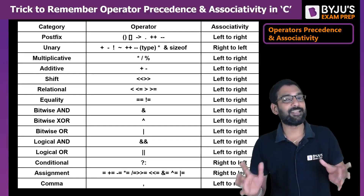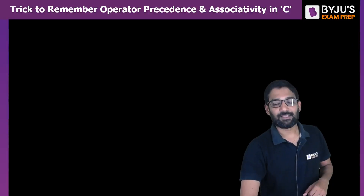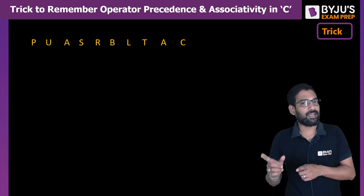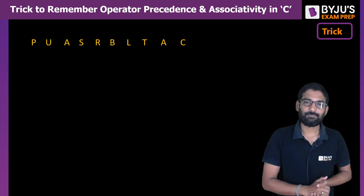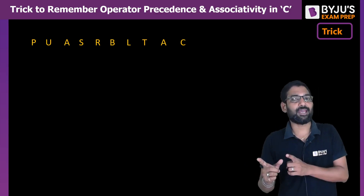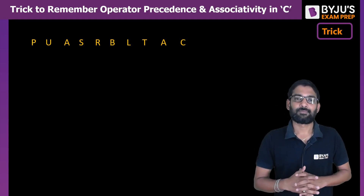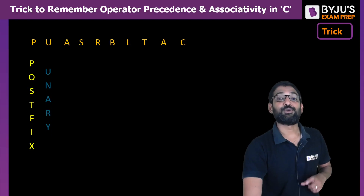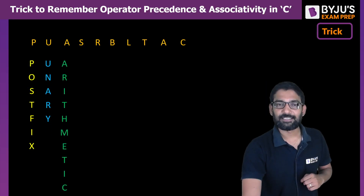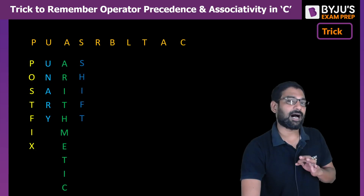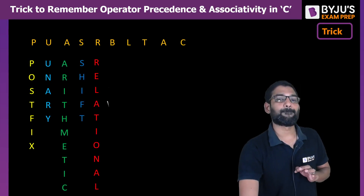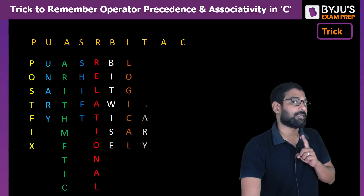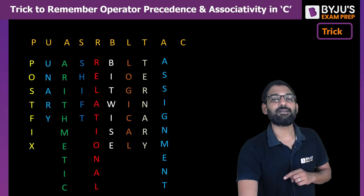The trick is to remember the short code: P-U-A-S-R-B-L-T-A-C. Here, P is for postfix, U for unary, A for arithmetic, S for shift, R for relational, B for bitwise, L for logical, T for ternary, A for assignment, and C for comma.